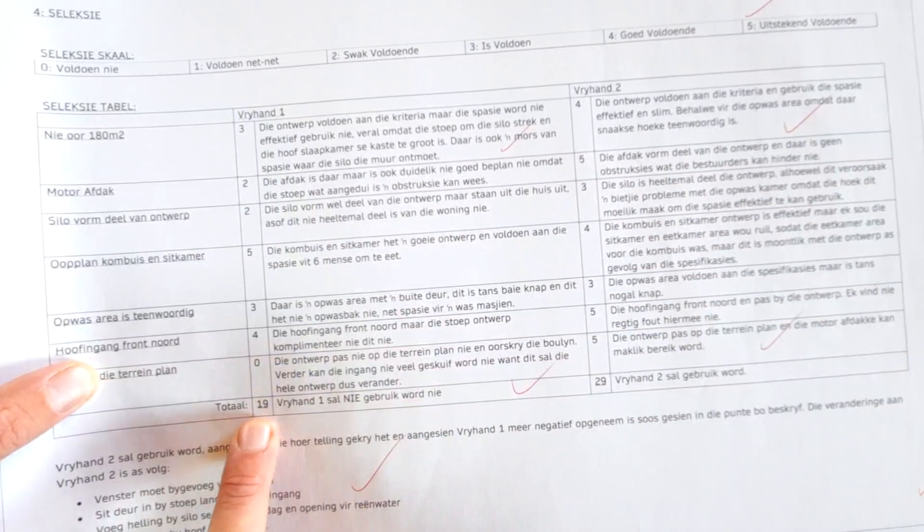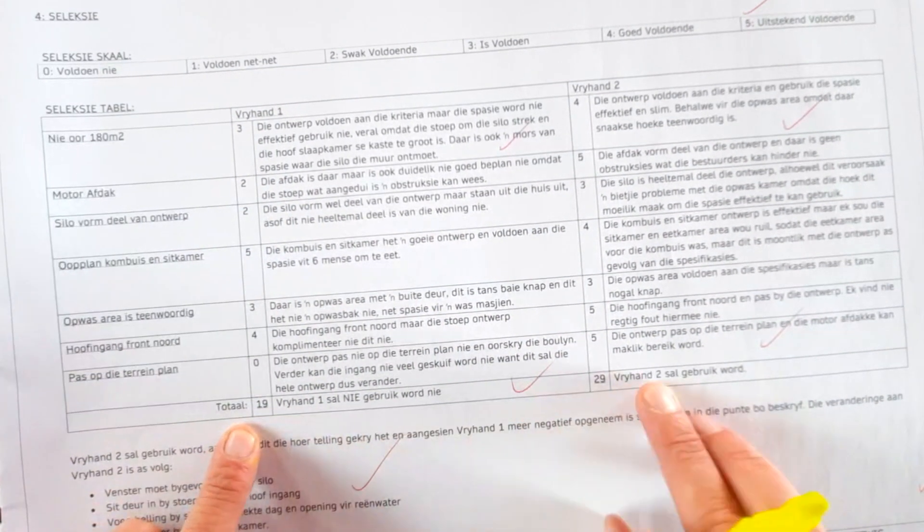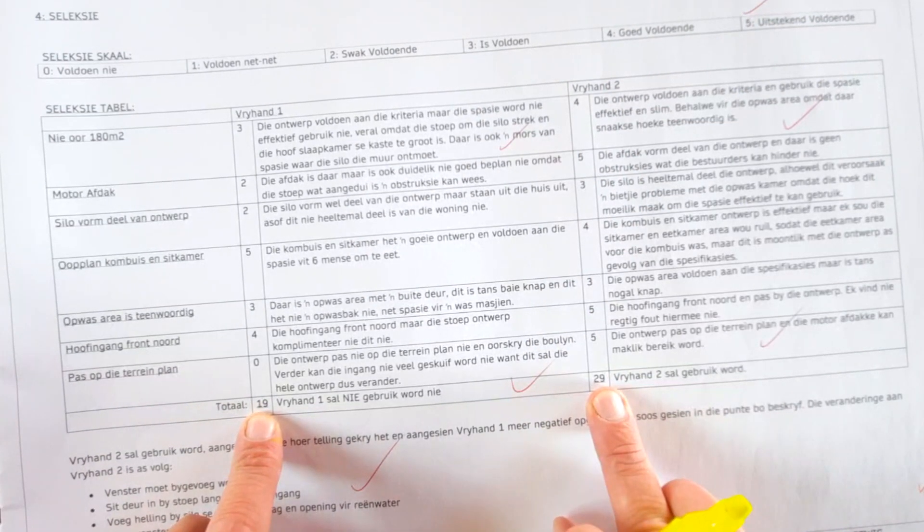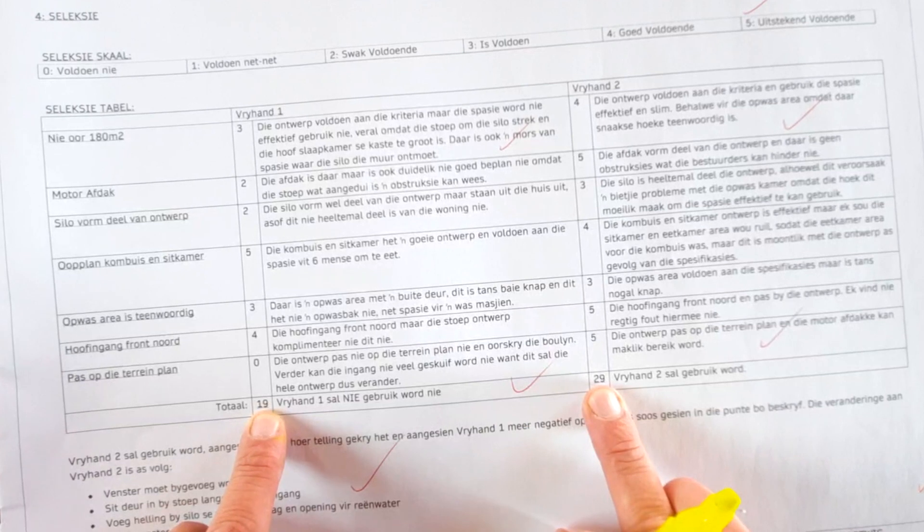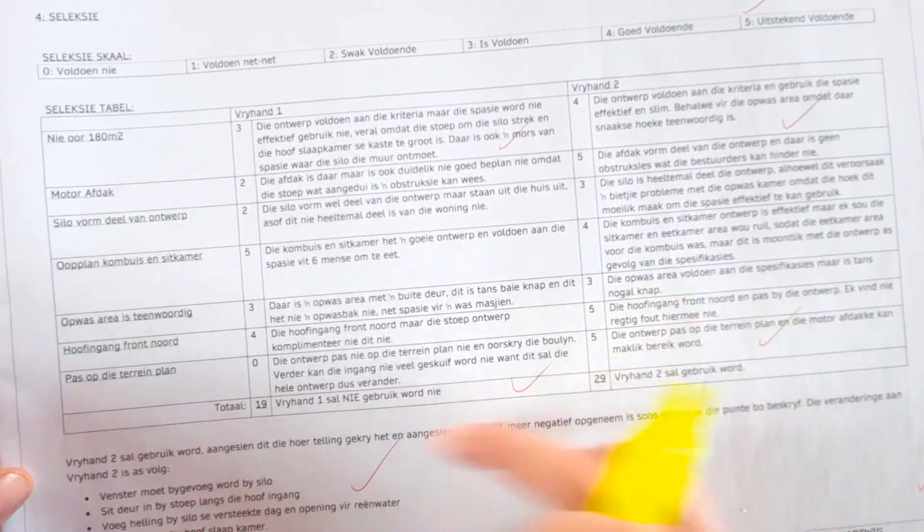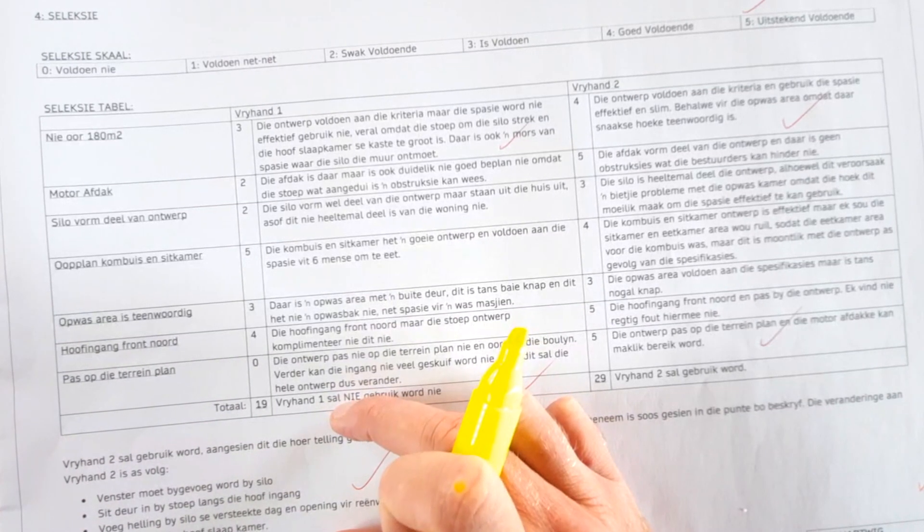With a total, if you add that up, gives you a total. And that's how easy it is to then determine that concept two, in this case, was the correct one to proceed with because of its rating and the descriptions on either side. And then at the end, there's a summary of why they choose it.